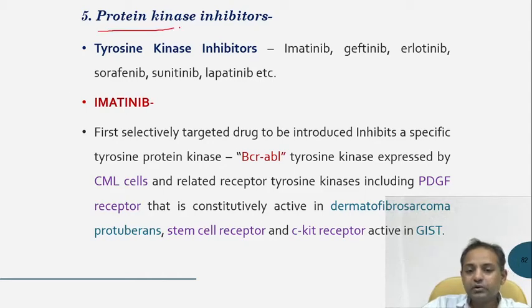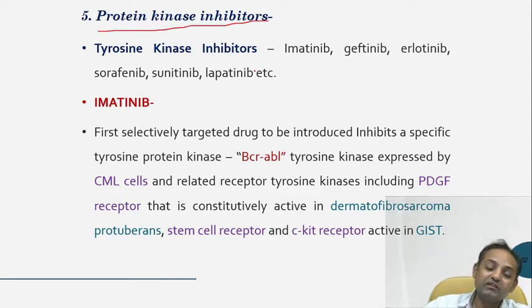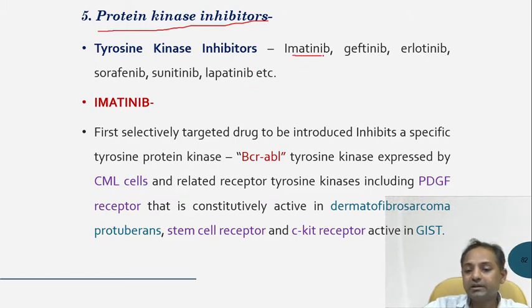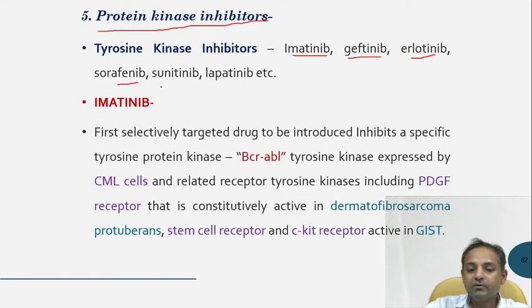Next is protein kinase inhibitors. This is a more specific kind of anti-cancer agent. The drugs include imatinib, gefitinib, erlotinib, sorafenib,